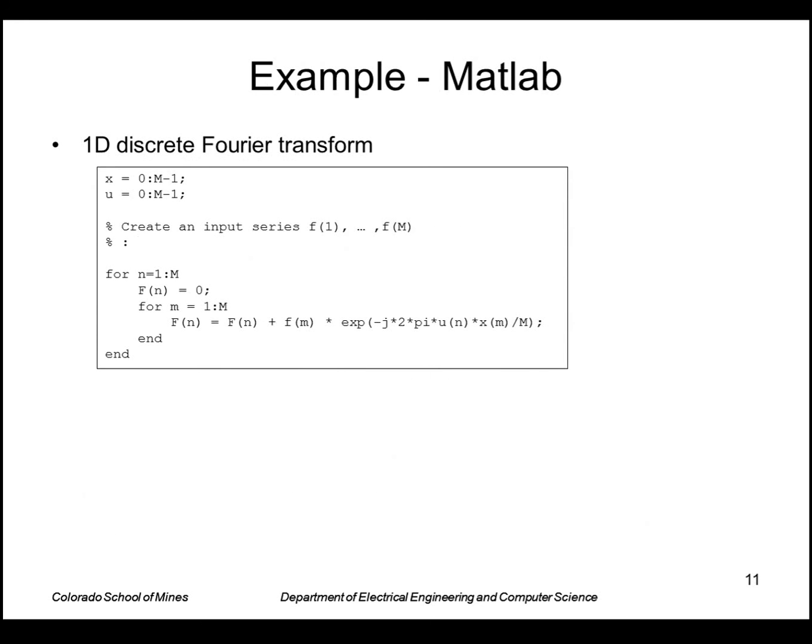Here's an example in MATLAB of performing the 1D discrete Fourier transform, just directly using the definition on the previous page, applying that to some input series that we create, f of 1 through f of m. So if you plug in, let's say, the rectangle function like this, note that I centered it around zero so it actually straddles zero.